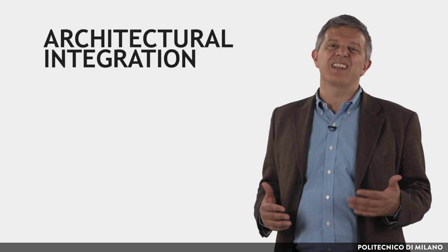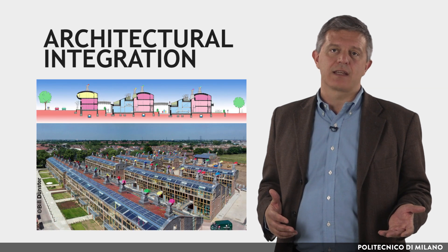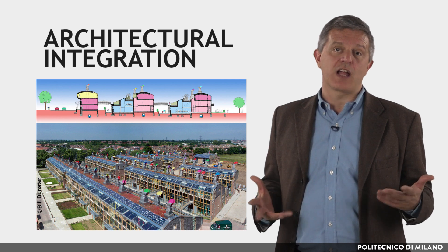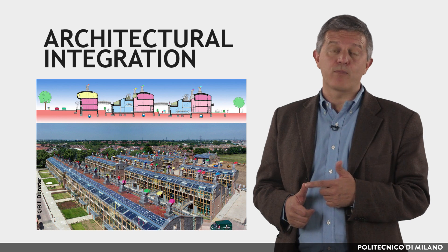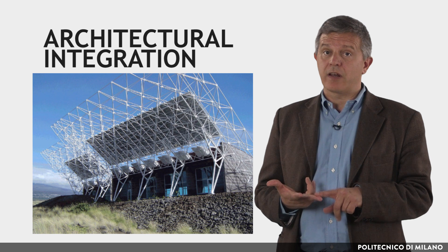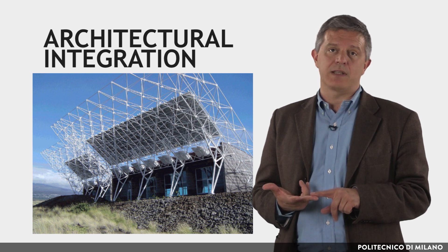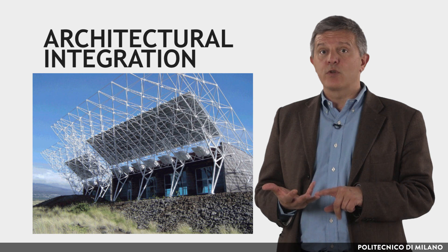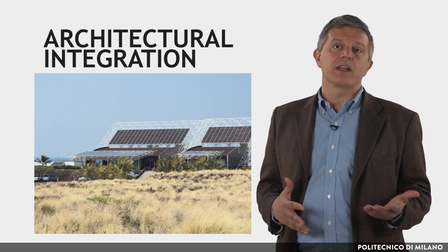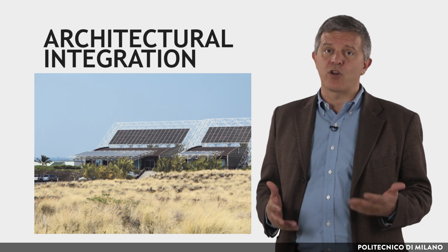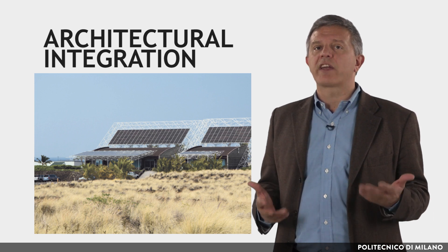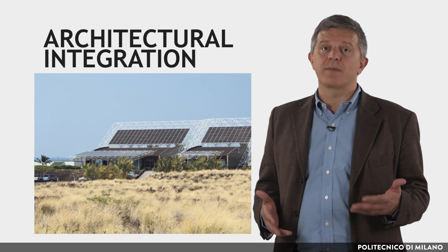Architectural integration represents an interesting opportunity for photovoltaics, since installing modules on the building envelope provides advantages such as use of land surface already occupied by buildings, savings on support structures, replacement of traditional roof elements, and the possibility of using the energy produced on site. In order to obtain the best performance of a photovoltaic system, whether integrated into the building envelope or not, careful planning is necessary. For example, it is important to avoid shading and overheating of the modules in order to maximize their performance.